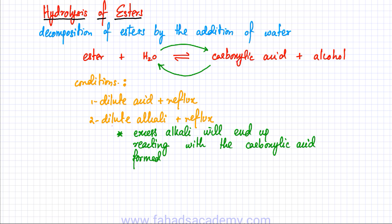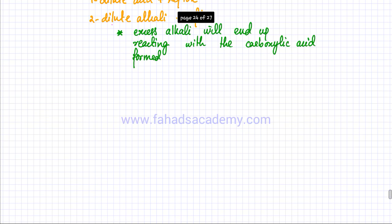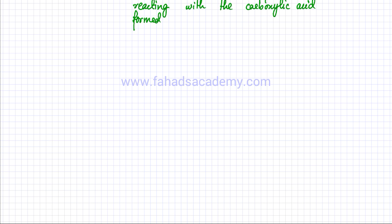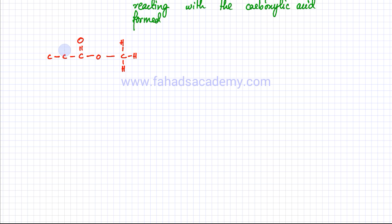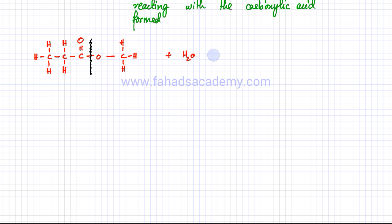I'm going to give two examples, one for each set of conditions. Let's start with the hydrolysis of methylpropanoate. Methylpropanoate has a C double bond O, single bond O ester group. 'Methyl' means there is one carbon atom on the single bond O side, and 'propanoate' means there are three carbon atoms on the other side. We'll break this ester using dilute acid plus reflux, splitting the ester group in the middle to produce two products.